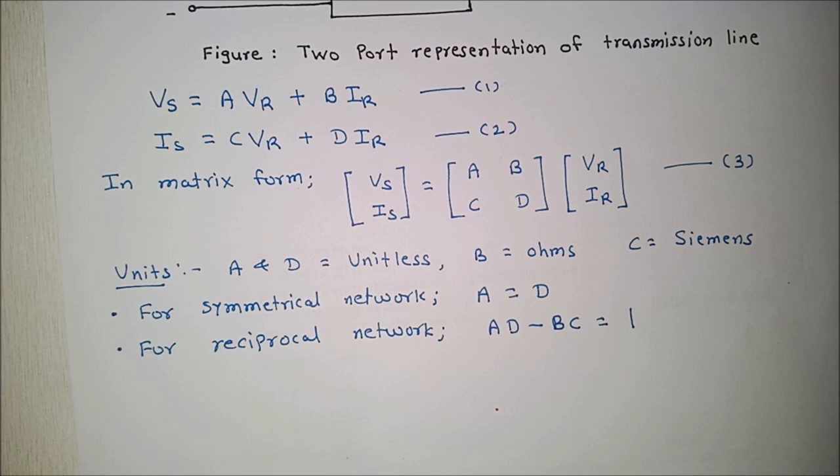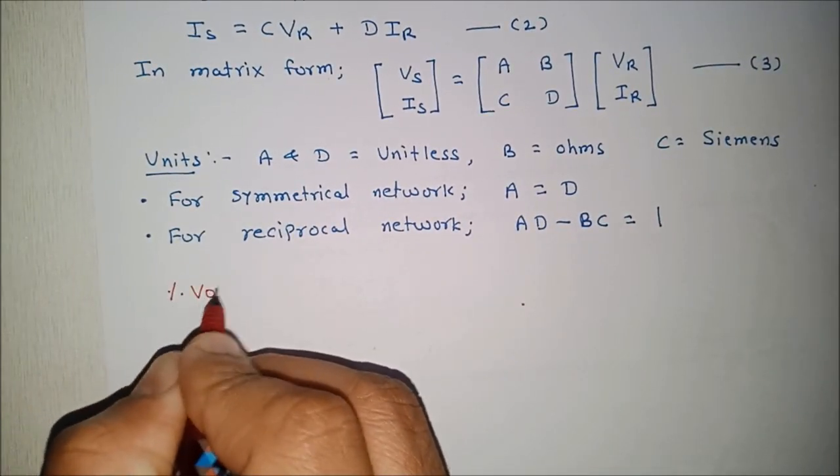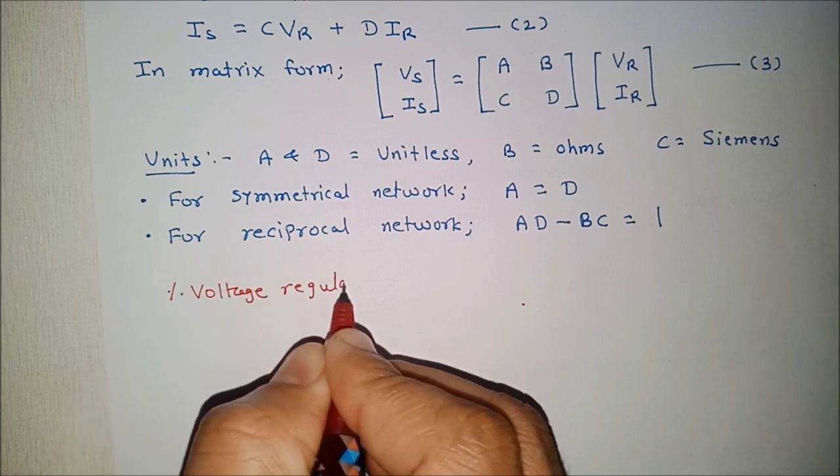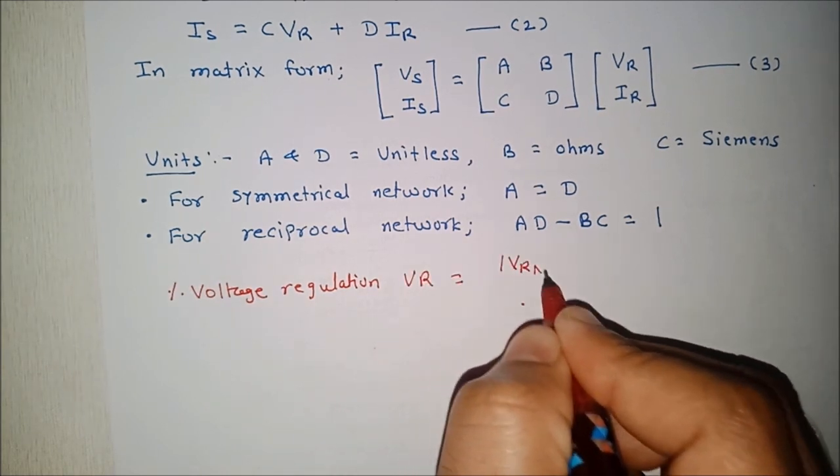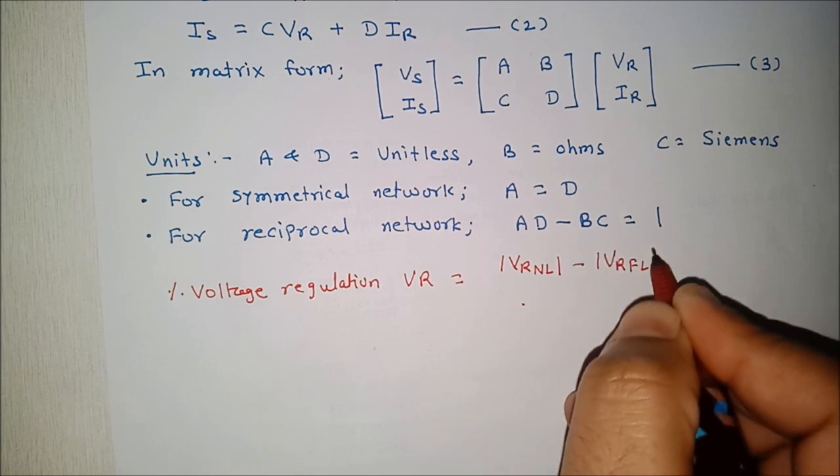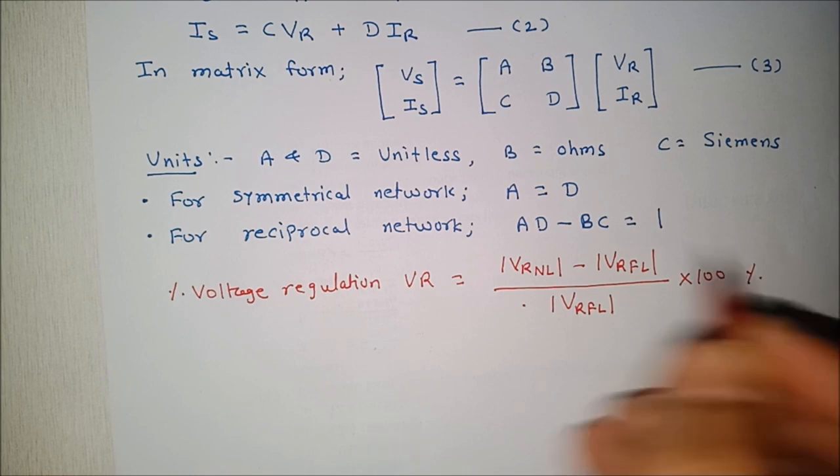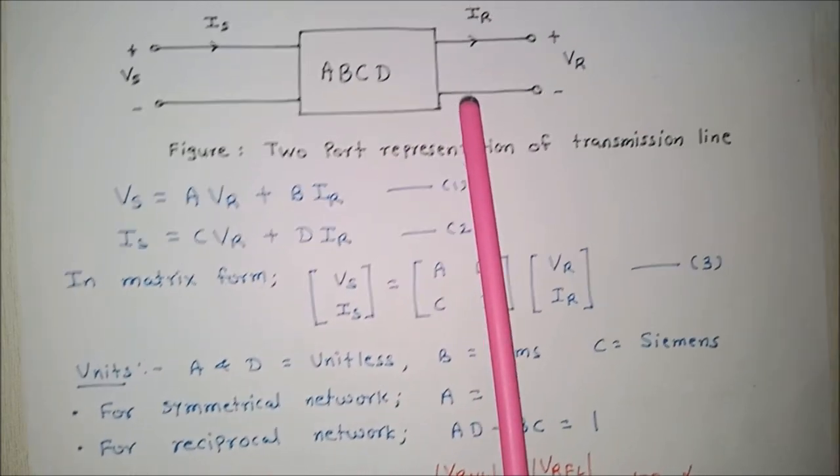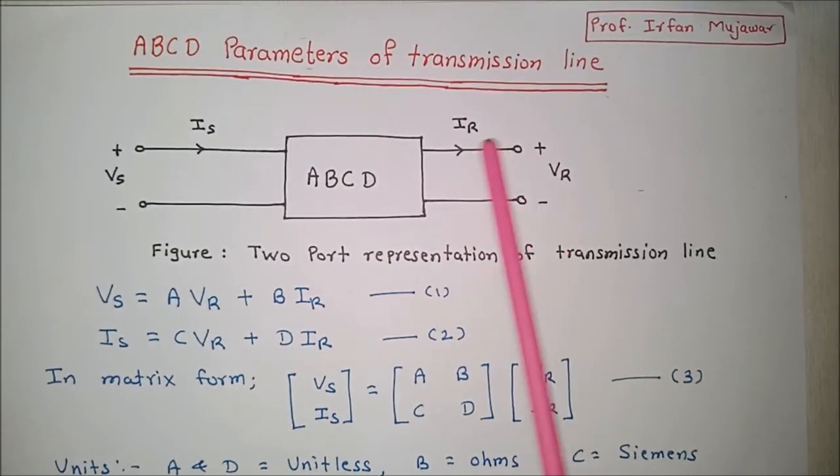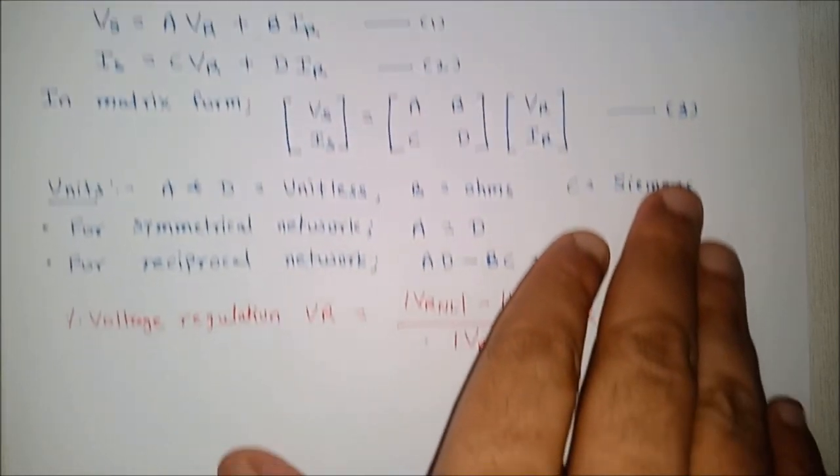Now how to determine the voltage regulation? Now we know that voltage regulation of transmission line, so percentage voltage regulation of line Vr, it is given by Vr no load minus Vr full load divided by Vr full load into 100 percentage. Now how to obtain Vr no load? Now see the equation number 1, when we say there is a no load condition, what it means is that no current will flow through the load. So, Ir will be 0.